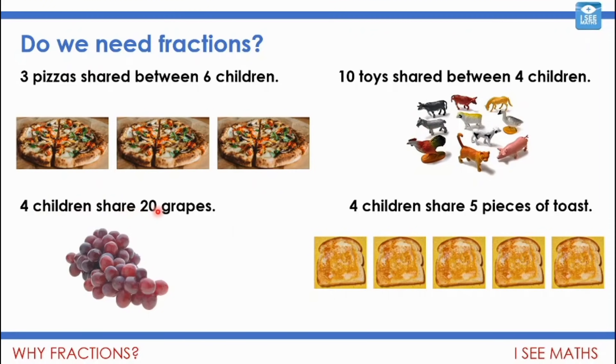What about four children share 20 grapes? Well, actually, we don't need to split up the grapes here. If we share them equally, then each child will have five. So that one doesn't need fractions. It's whole numbers.